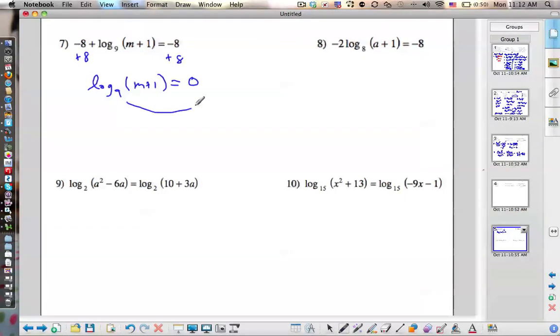So then I do the ear. What do I get after the ear? I know that 9 to the 0 has to equal m plus 1. 9 to the 0 equals m plus 1. We know that 9 to the 0 is 1, making m equal to 0.